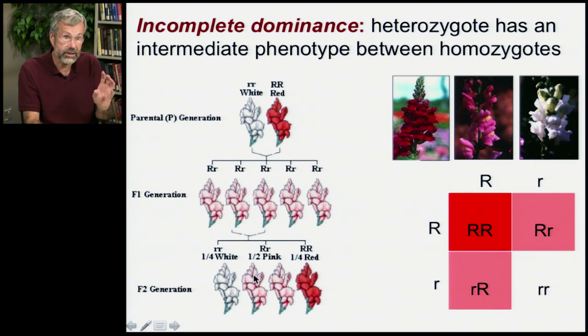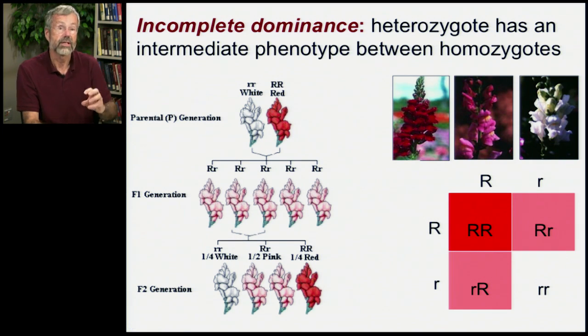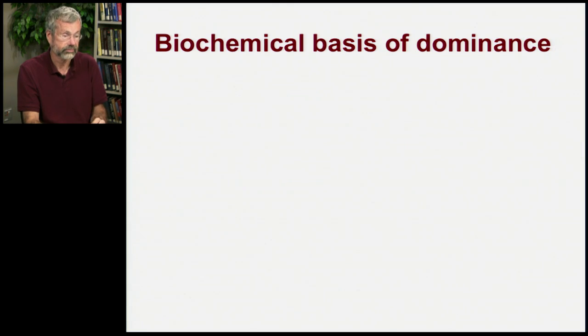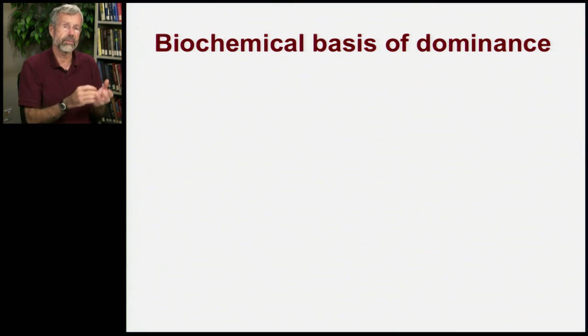So in this case, the phenotypes indicate genotype, because there's only incomplete dominance. Now why do we have some characters that show complete dominance while others show incomplete dominance?